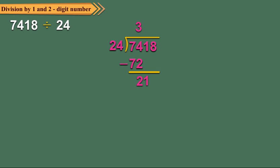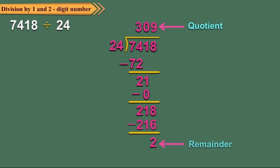Here, 24 multiplied by 1 equals 24, which is greater than 21. So we use 24 multiplied by 0 equals 0. Write 0 in the quotient and 0 below 21. Subtract 0 from 21 to get 21. Bring down 8 to the right of 21 to get 218 as the new dividend. Since 24 multiplied by 9 equals 216, write 9 as the next digit of the quotient and 216 below 218. Subtract 216 from 218 to get 2 as the remainder. So 7,418 divided by 24 gives 309 as the quotient and 2 as the remainder.